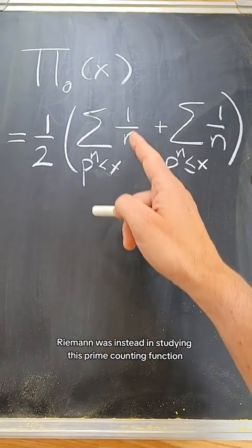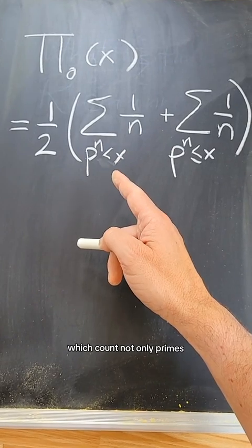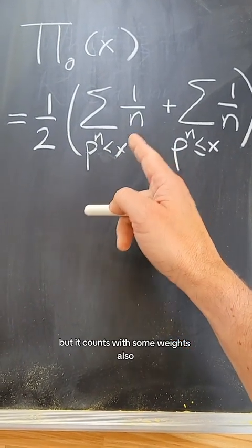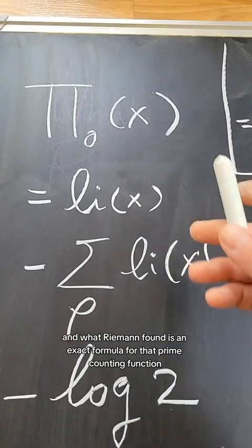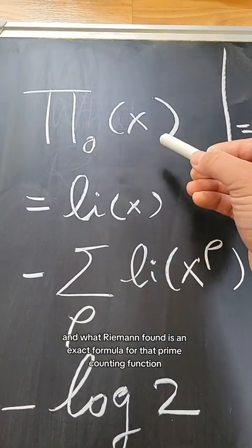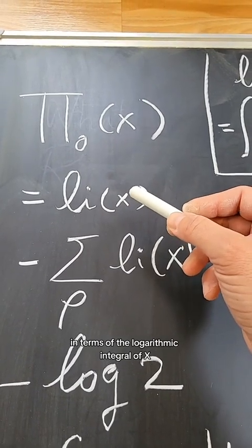Riemann was instead studying this prime counting function, which counts not only primes, but it counts with some weights, also prime powers up to x. And what Riemann found is an exact formula for that prime counting function in terms of the logarithmic integral of x.